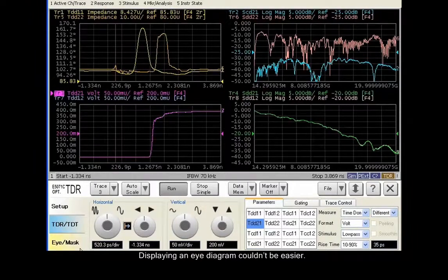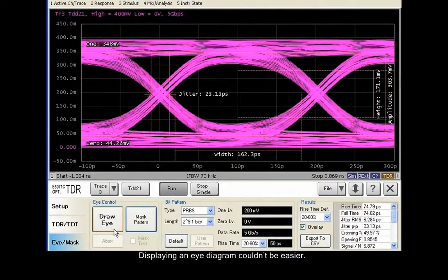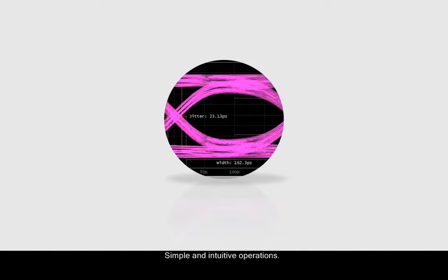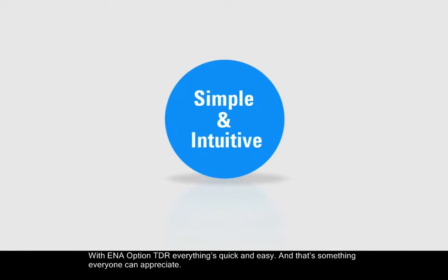Displaying an eye diagram couldn't be easier. Simple and intuitive operations. With ENA Option TDR, everything's quick and easy, and that's something everyone can appreciate.